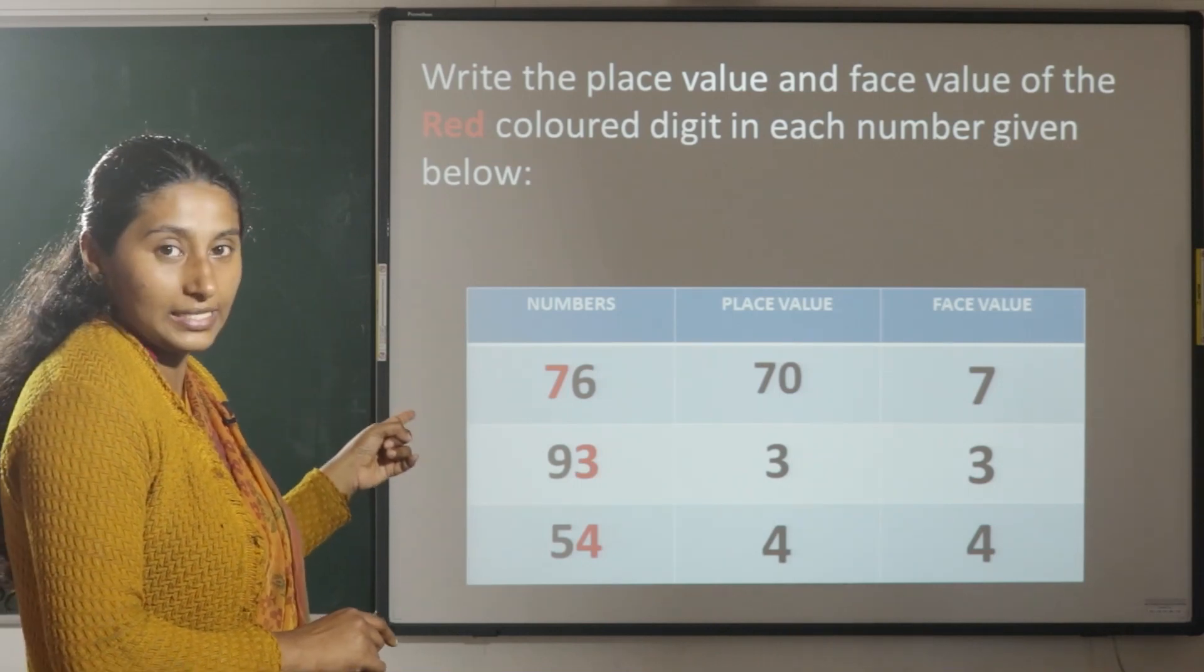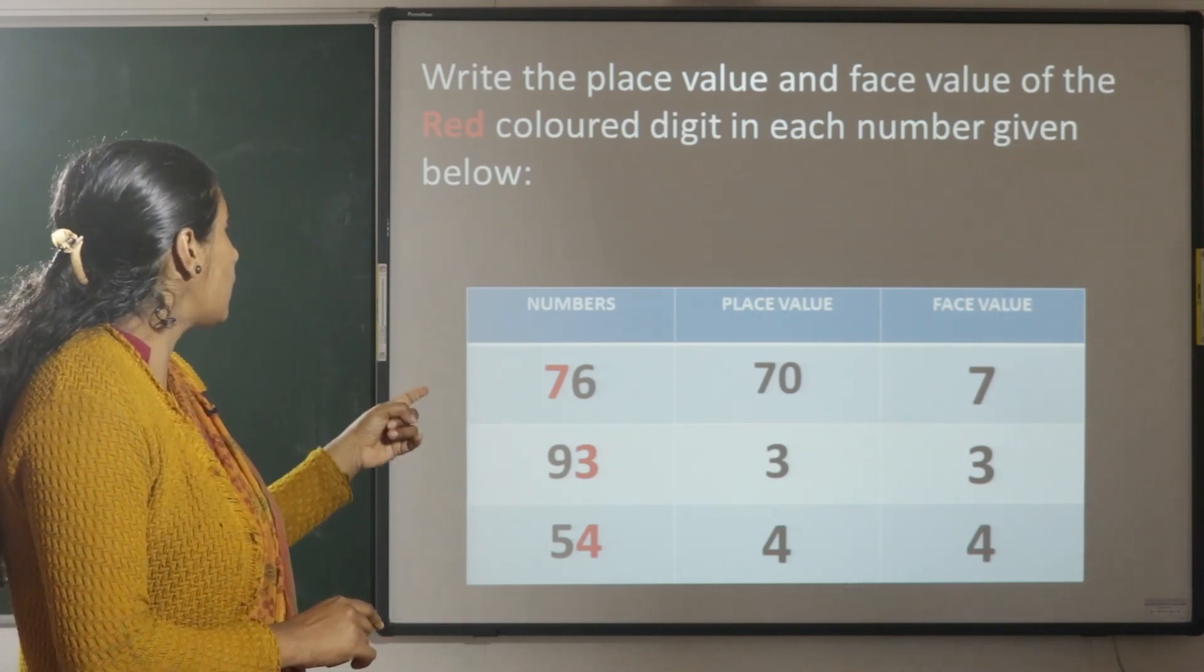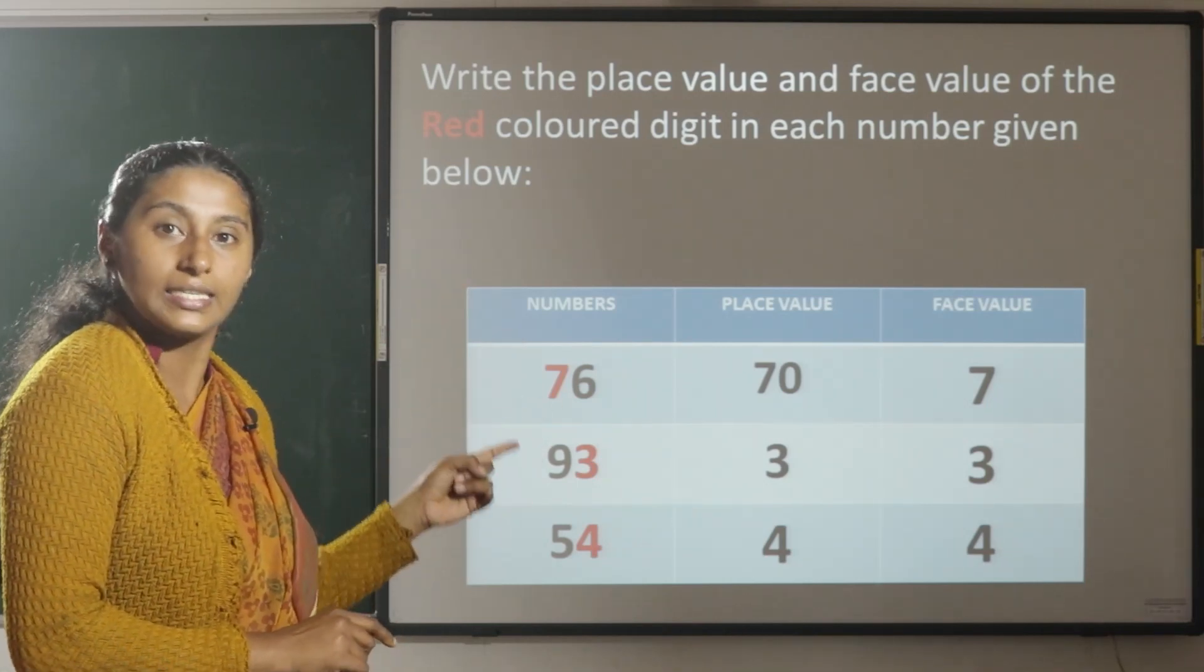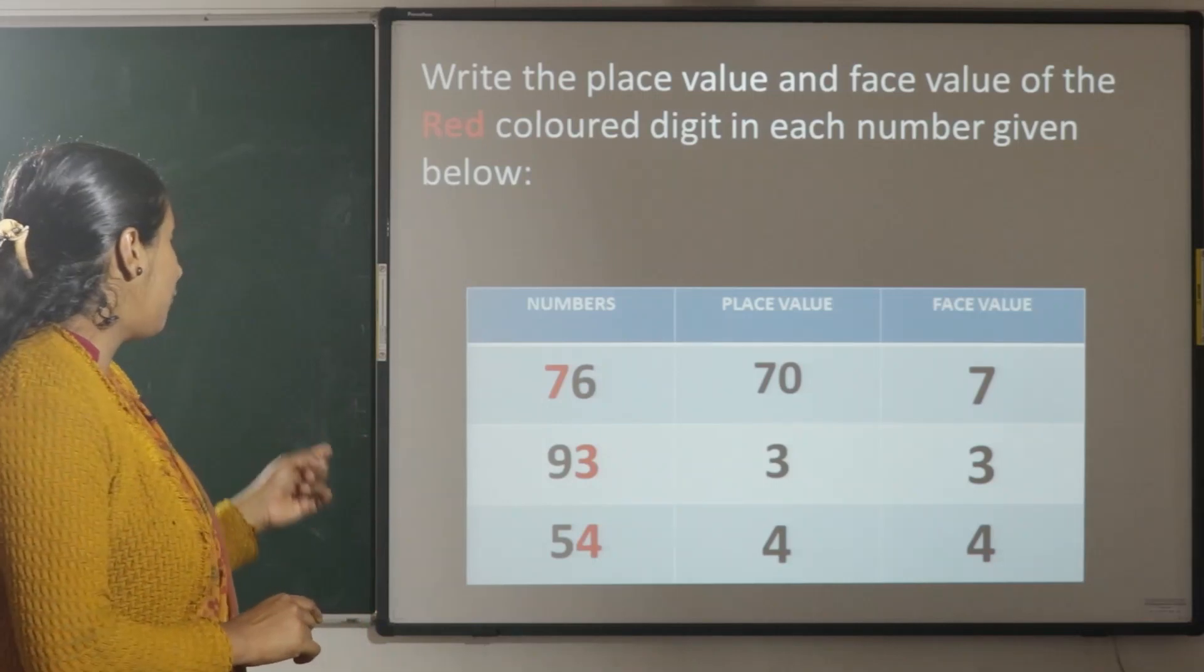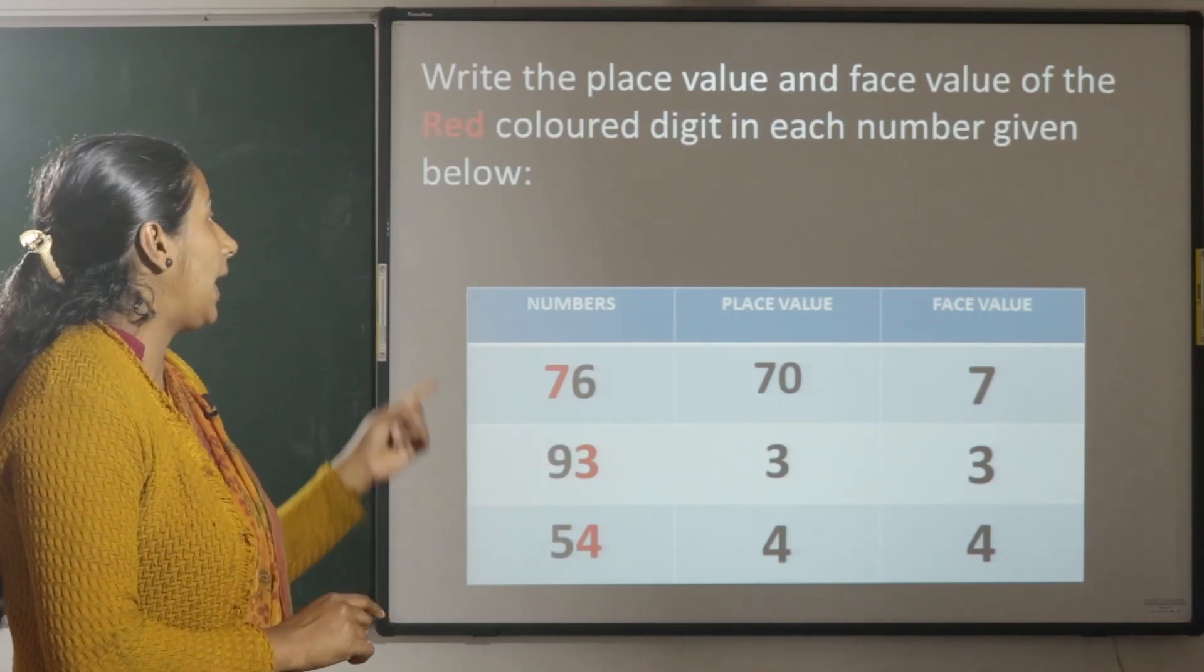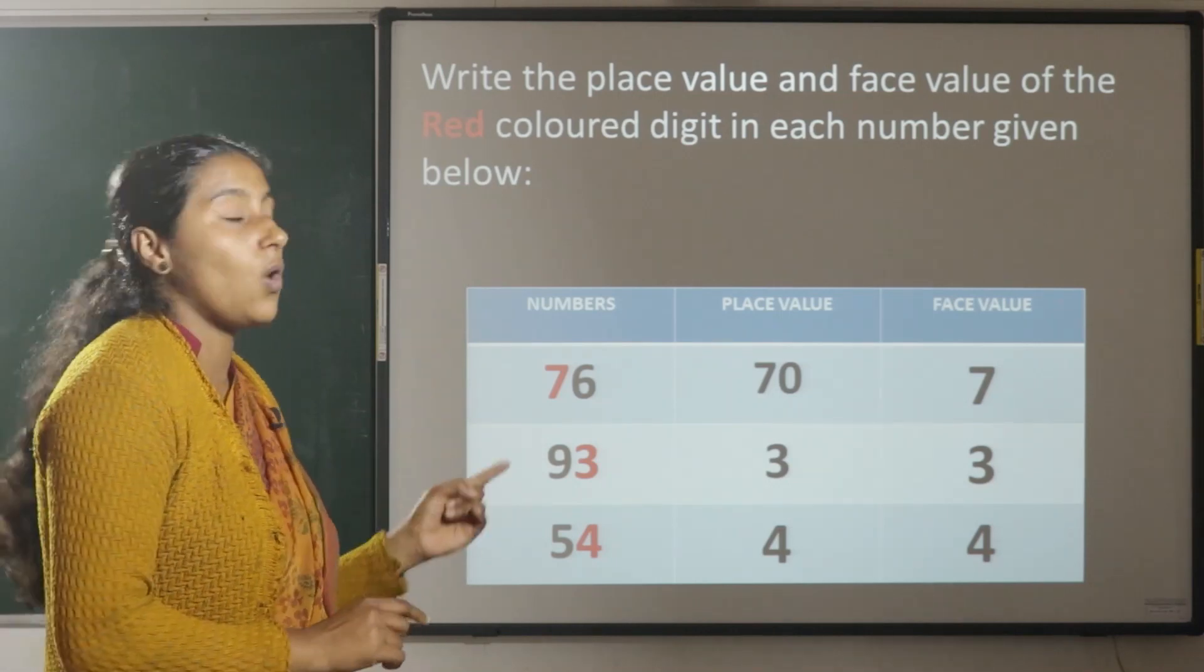Your red color number is 3. The place value of 3 is 3 and the face value of 3 is 3. 54. The place value of 4 is 4 and the face value of 4 is 4.